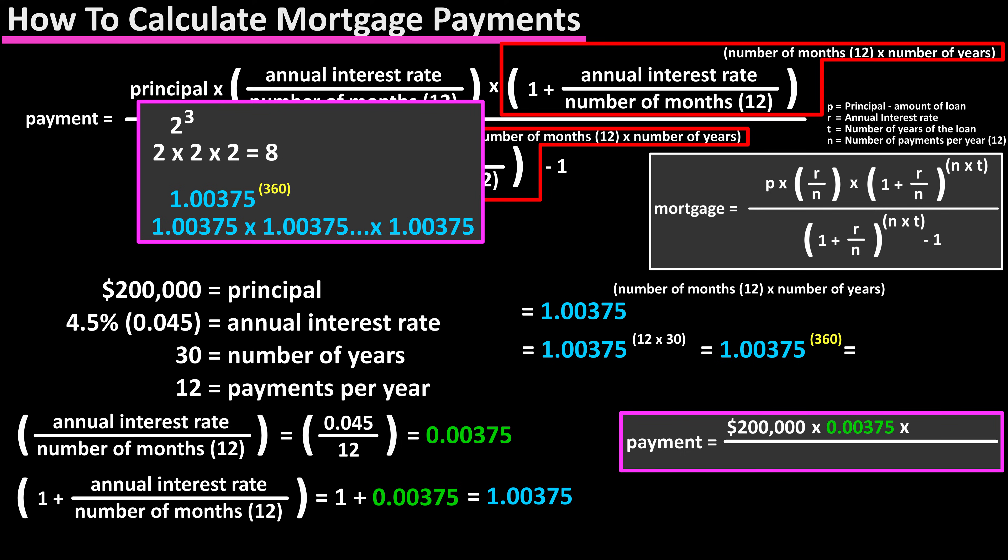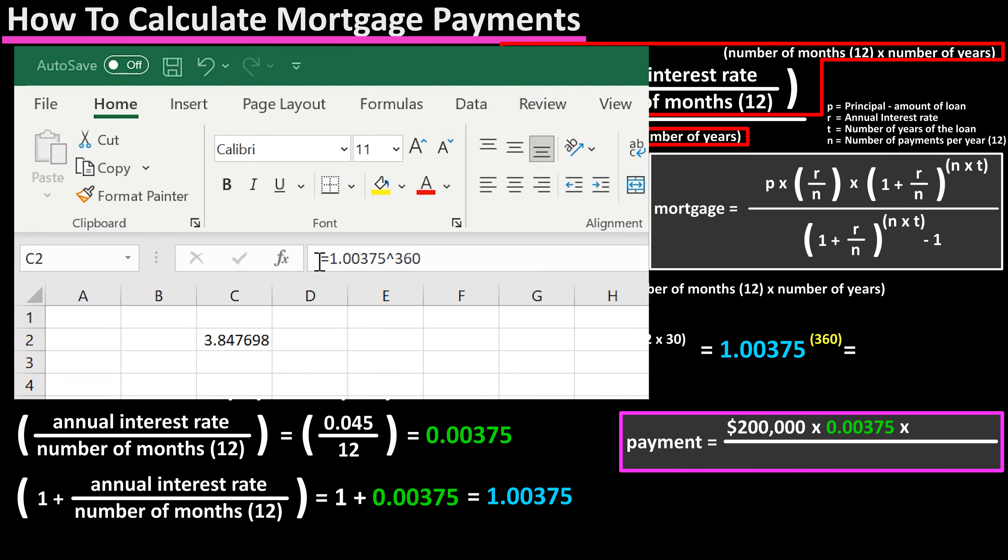Using a calculator or in Excel, you would type in equals 1.00375 carat symbol, which is shift 6 on the keyboard, 360, and the result is 3.847699, rounding it off.